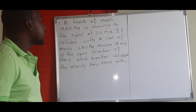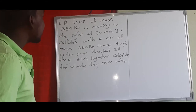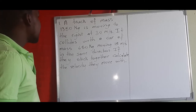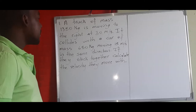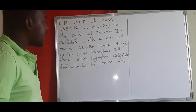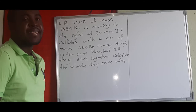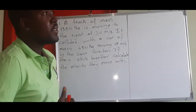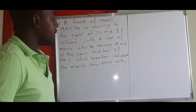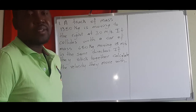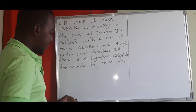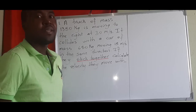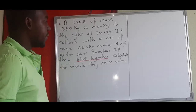Question one: a truck of mass 1,550 kilograms is moving to the right at 30 meters per second. It collides with a car of mass 600 kilograms moving at 15 meters per second in the same direction. If they both stick together, calculate the velocity they move off with. With every momentum question, the first thing you need to know is what type of collision it is. Since they stick together, this is an inelastic collision.